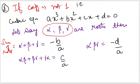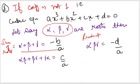The second relation: the sum of pairwise products of the roots equals c by a — the coefficient of x divided by a. The third relation: the product of all three roots equals negative d by a — negative times the constant divided by a. Most MCQ questions can be solved using just the first and third relations.